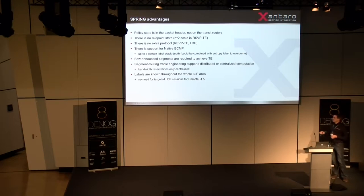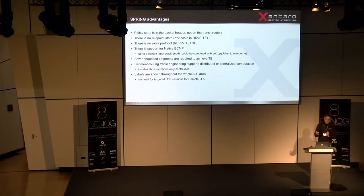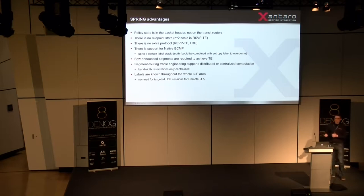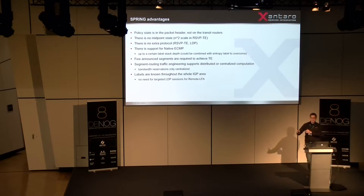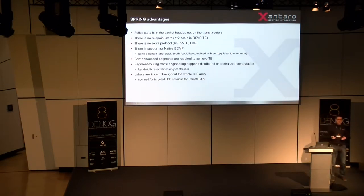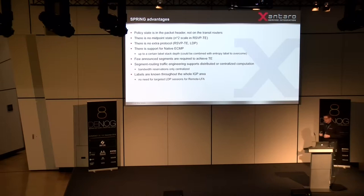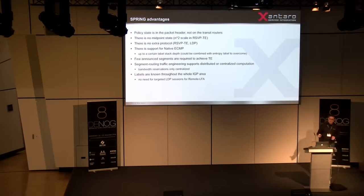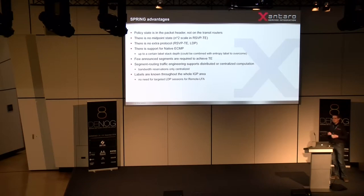Another advantage: labels are known throughout the whole IGP area. Because within an IS-IS or OSPF area every router has the same information in its database, each router knows which labels its neighbor routers are using. This helps with remote LFA. With LDP, remote LFA requires a targeted LDP session because your neighbor may be using you as a next hop, causing a loop, so you need to wait for network convergence. With Spring, you know exactly which labels to use, so you can natively install a backup path even if the neighboring router uses you as its next hop — no additional signaling protocol needed.